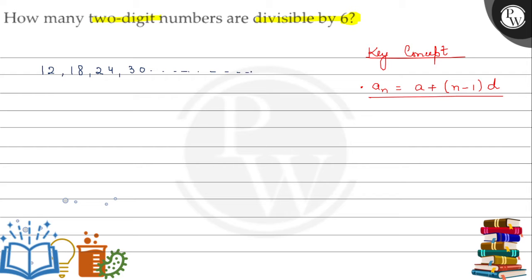The last term which is divisible by 6, we have to check. We can say that 96, because 6 times 16 equals 96. After 96, it will not be possible.